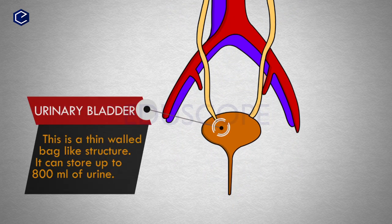The urinary bladder is a thin-walled, bag-like structure. It can store up to 800 milliliters of urine.